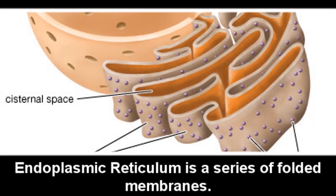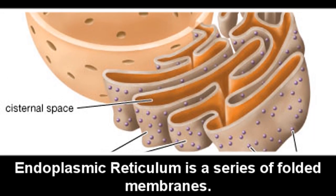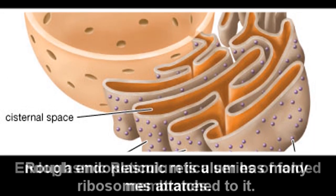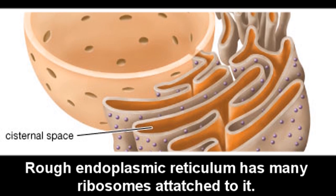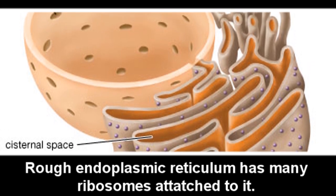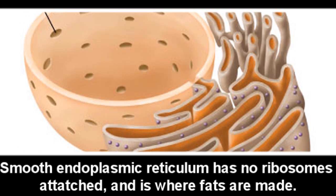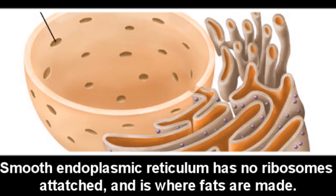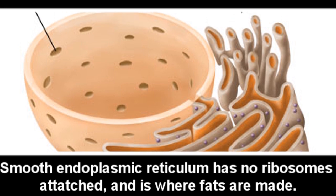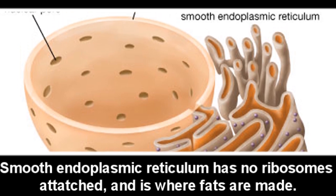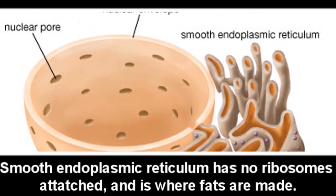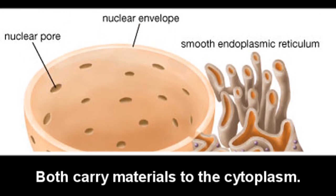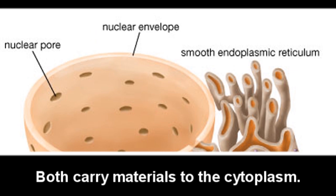Endoplasmic reticulum is a series of folded membranes. Rough endoplasmic reticulum has many ribosomes attached to it. Smooth endoplasmic reticulum has no ribosomes attached to it and is a structure where fats are made. Both types of endoplasmic reticulum carry materials through the cytoplasm.